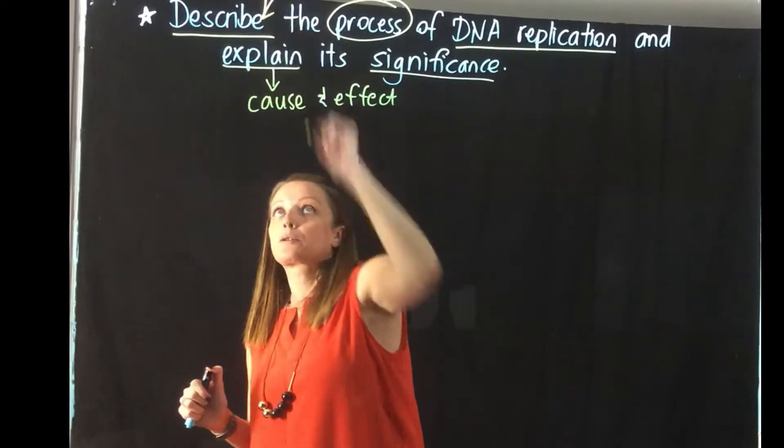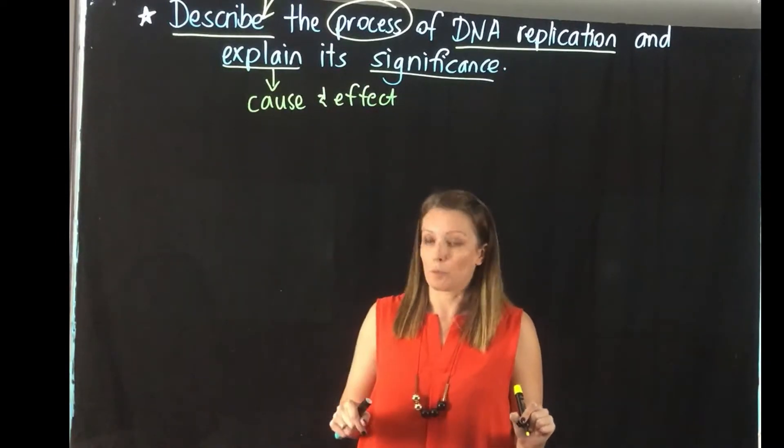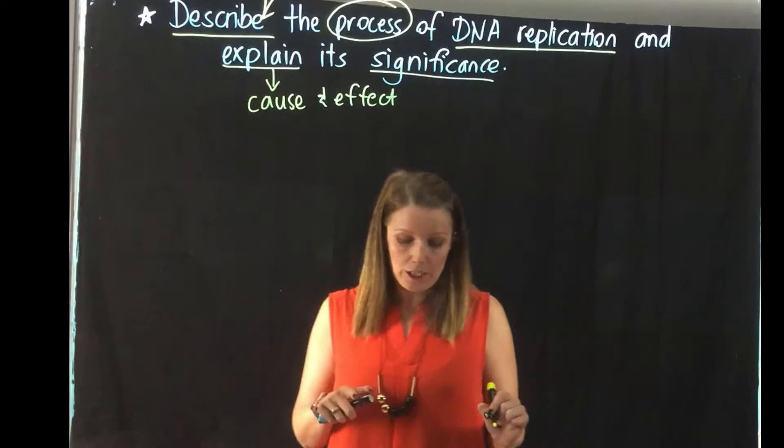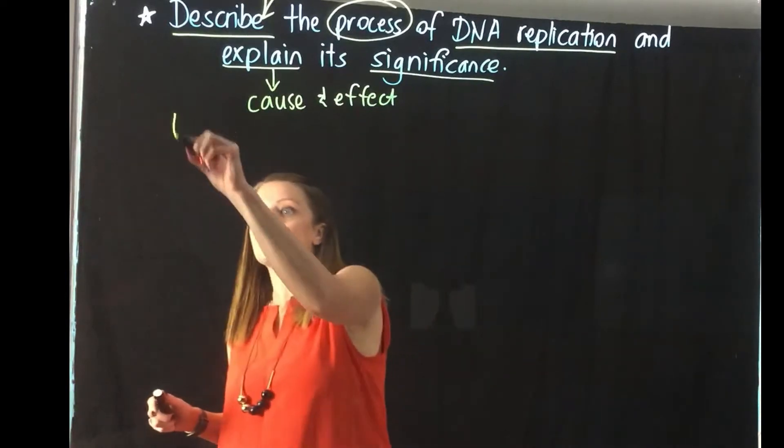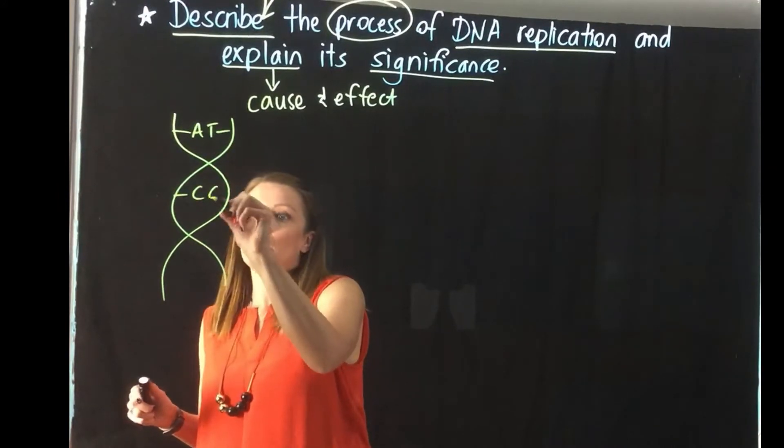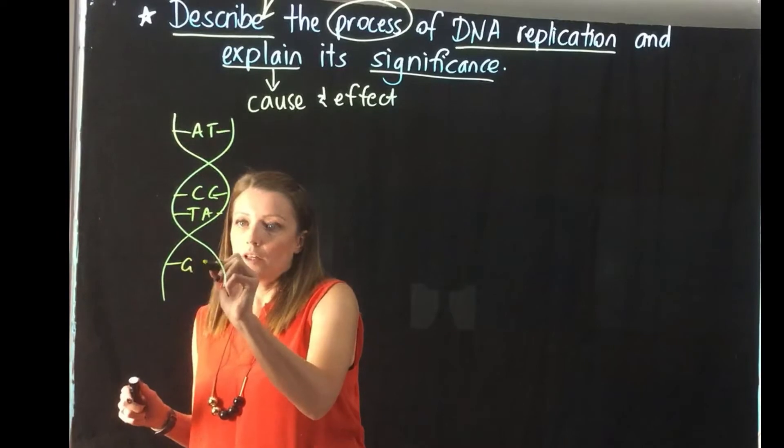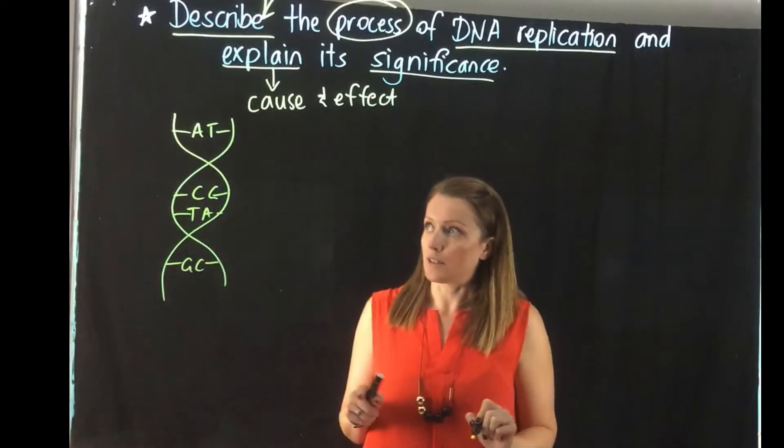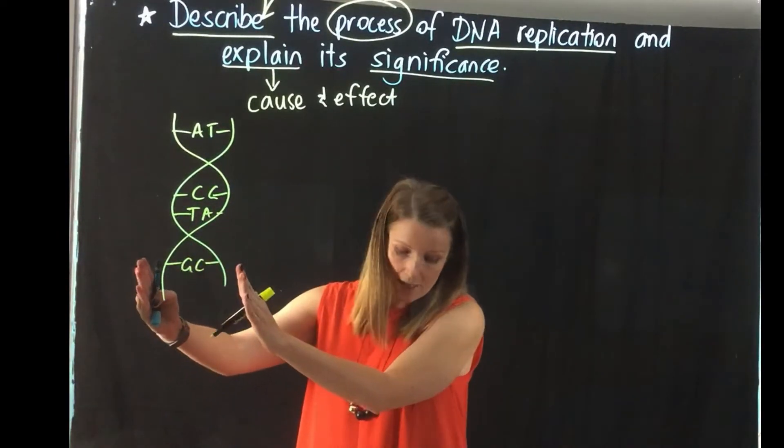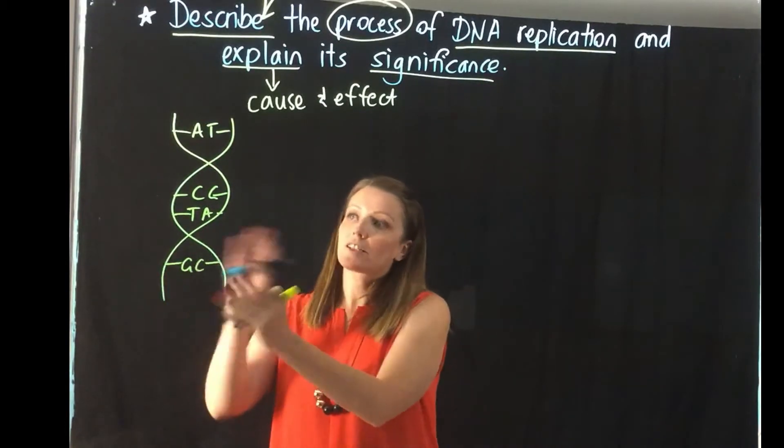So we're going to start off with the describe because I think this probably takes up most of the time for this particular dot point. As we've looked at earlier, we saw that DNA is in this helix structure because it needs to be wound up nice and tight in order to be able to fit into the nucleus of our cells. So that's how our DNA starts.